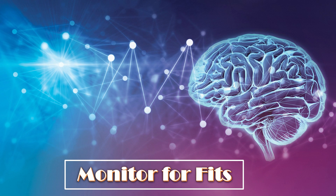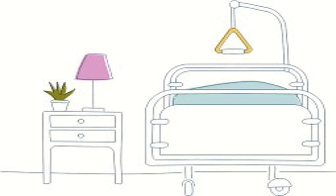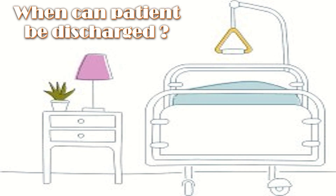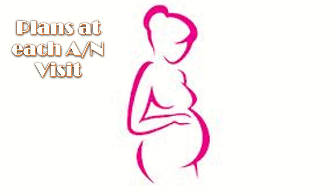Monitor the patient for fits; ideally keep the patient admitted until delivery due to the unpredictable nature of fits. The patient can be discharged once completely stable, fit-free, and blood pressure is under control, after explaining risks and taking written informed consent. If discharged, advise weekly antenatal visits. At each visit, inquire about fetal movement, signs of imminent eclampsia, abdominal growth pattern, and check blood pressure, pedal edema, right upper quadrant tenderness, clonus, preeclampsia profile weekly, and two-weekly ultrasound and Doppler scan.